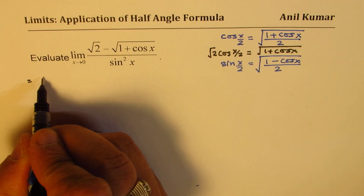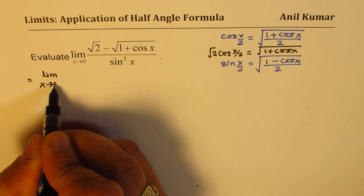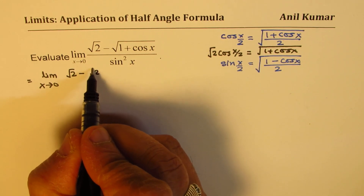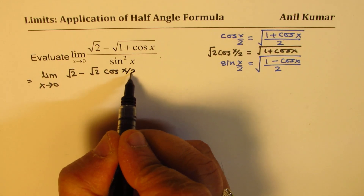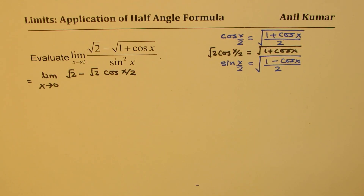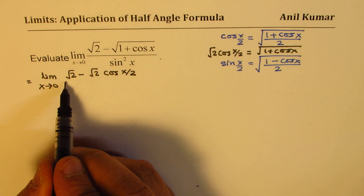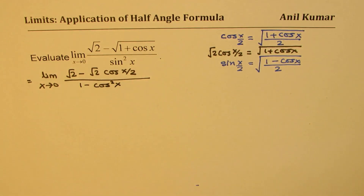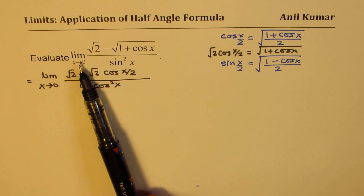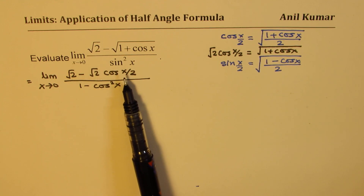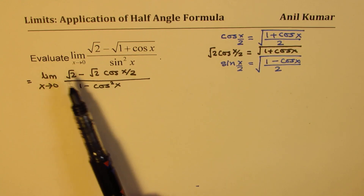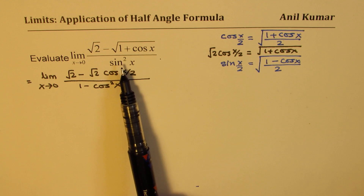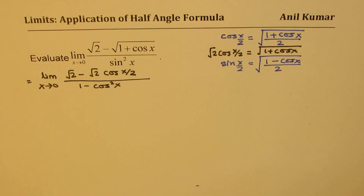We rewrite the expression as: limit x approaches 0 of square root of 2 minus cos(x/2), with sin square x in the denominator. We can write sin²x as 1 minus cos²x. When x approaches 0, cos(0) is 1, so we try to work with cosines rather than sines — since sin(0) is 0, dividing by 0 is undefined, which creates a problem.